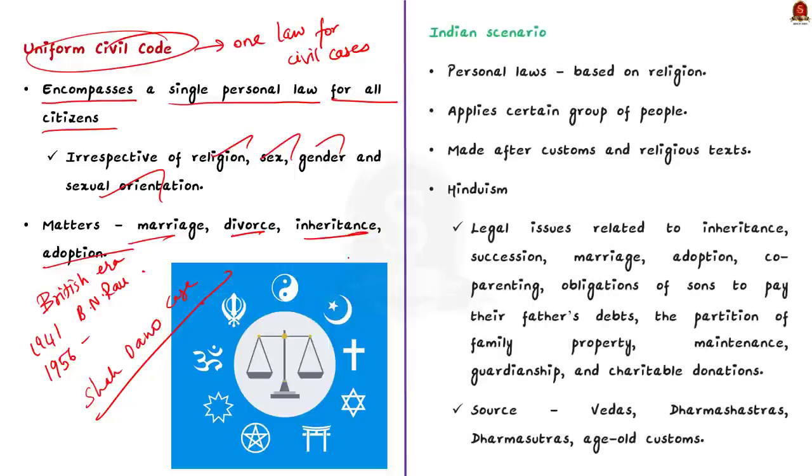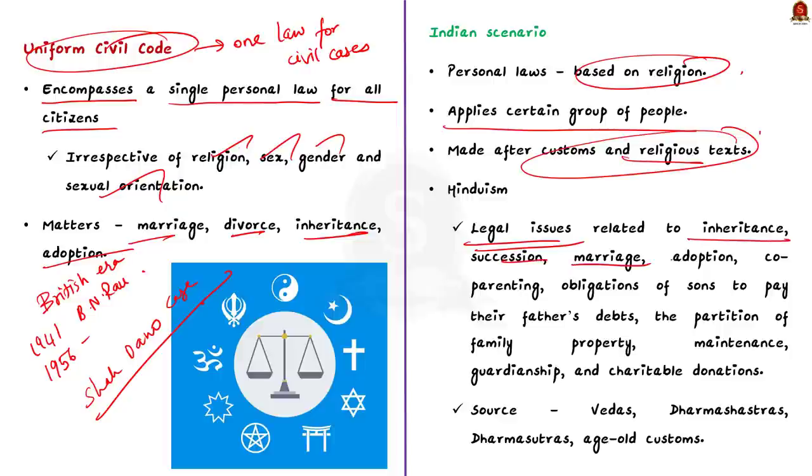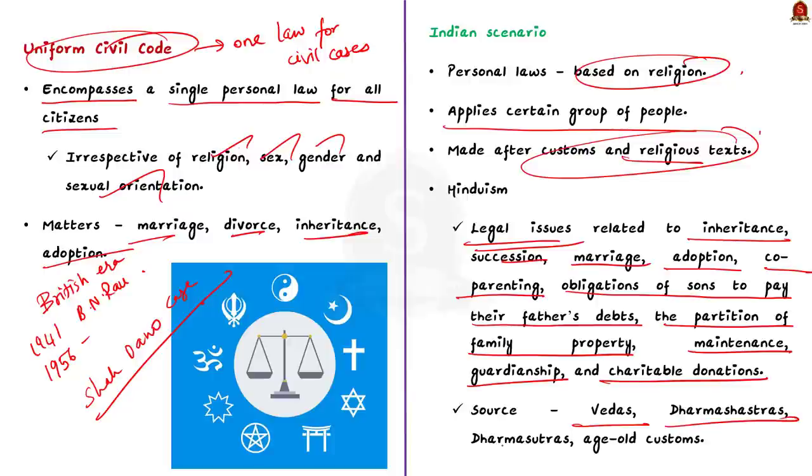Now, in India, personal laws are based on religion. These laws apply to a certain group of people based on their religion, caste, faith and belief. They are made after due consideration of customs and religious texts. Let us take the case of Hinduism and Islam. In Hinduism, the personal laws are applicable to legal issues related to inheritance, succession, marriage, adoption, co-parenting, obligations of sons to pay their father's debt, the partition of family property, maintenance, guardianship and charitable donations. The sources of these laws include Vedas, Dharmashastras, Dharmashutras and age-old customs.